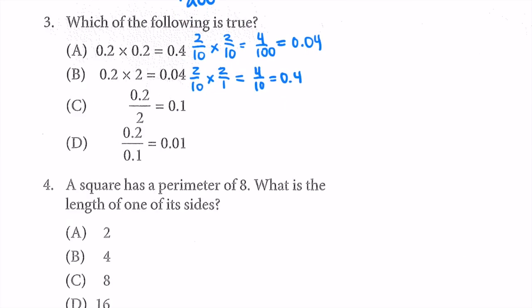Option C: 0.2 divided by 2 equals 0.1. Dividing by 2 is the same as multiplying by one half. So we do 2/10 times 1/2, and we get 2/20, which is 1/10, which is 0.1. So this one is true. That means our answer is C.